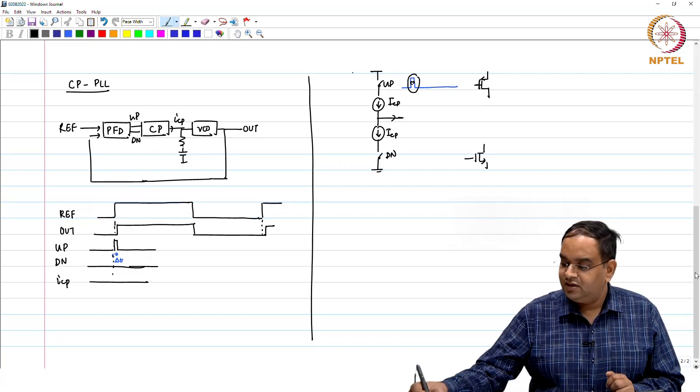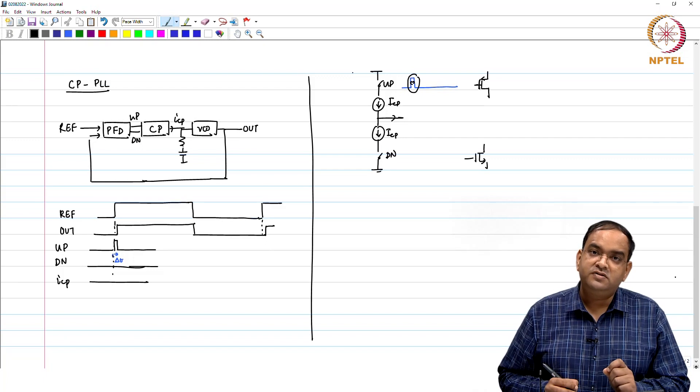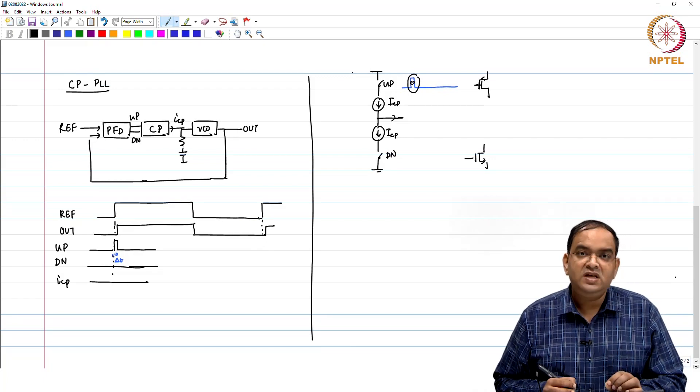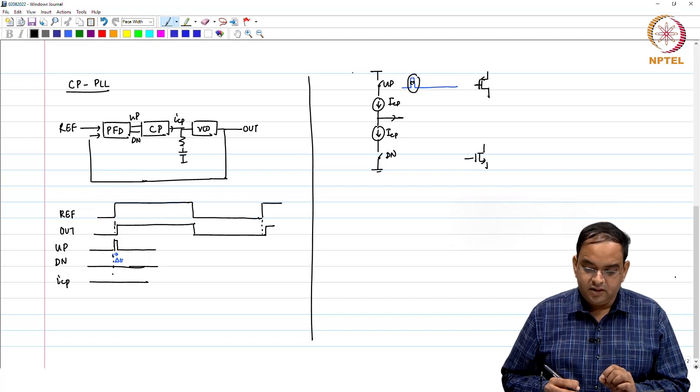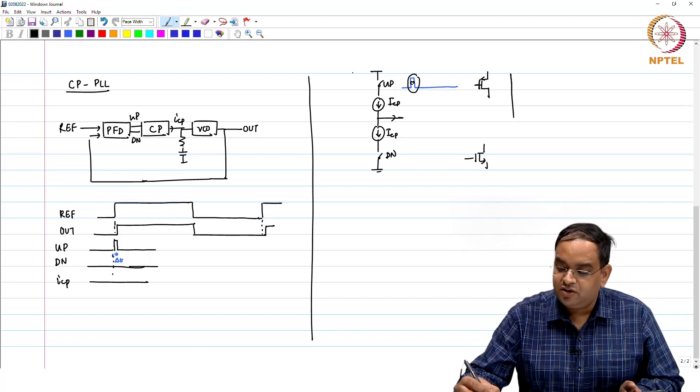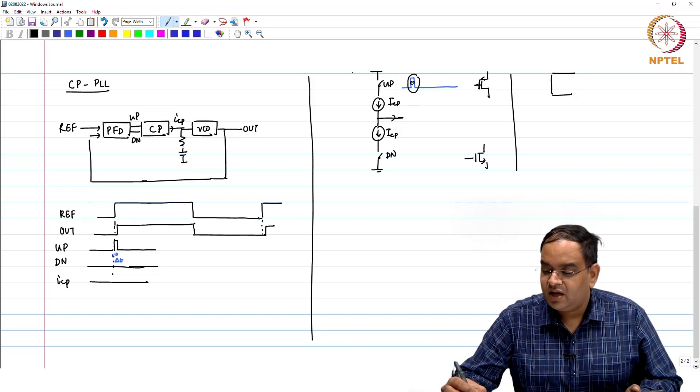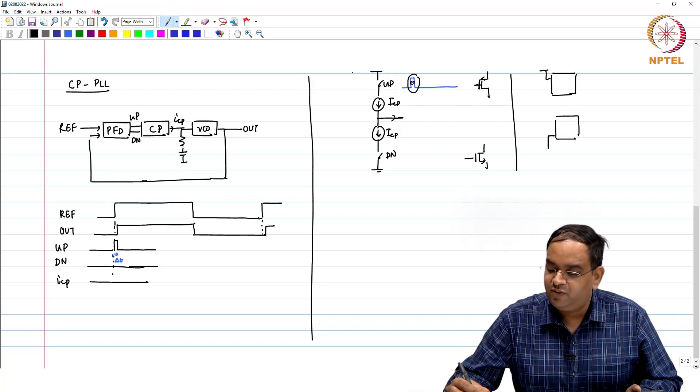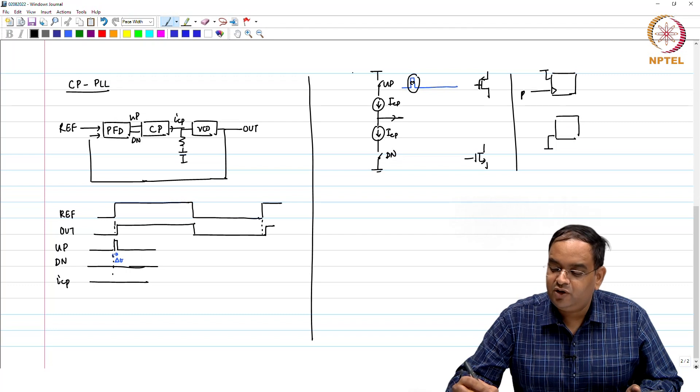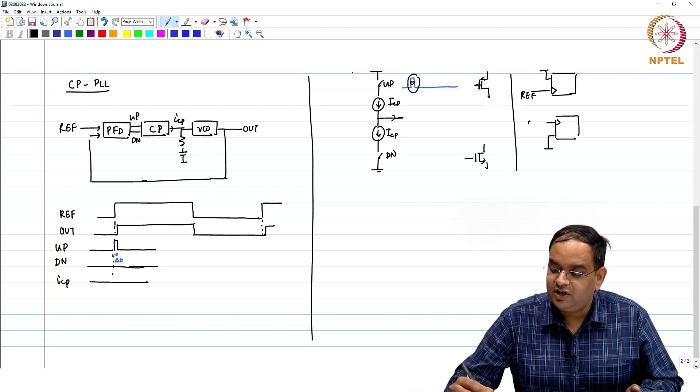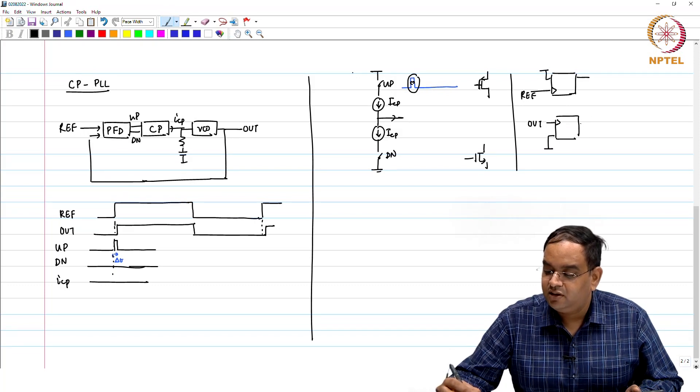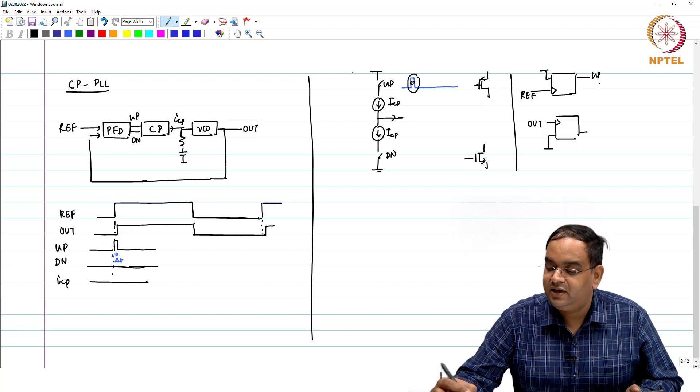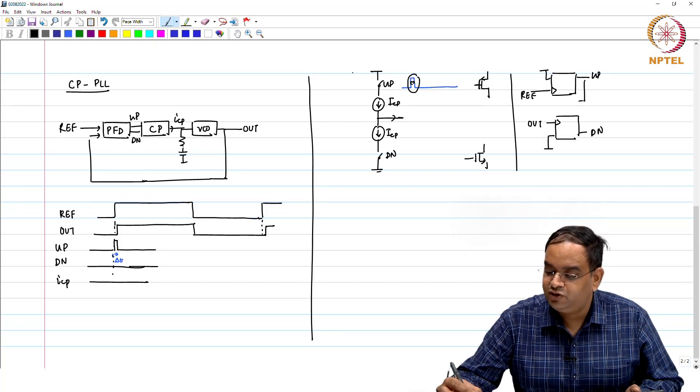If the current does not change, then even in the presence of the phase error at the input of the PFD, the PLL is not correcting for the output. There exists some region near the zero phase error in PFD block which we have seen so far that your output does not change. The PFD block which we saw earlier had two D flip flops, both whose inputs were connected to VDD, one was clocked with reference, other was clocked with out.